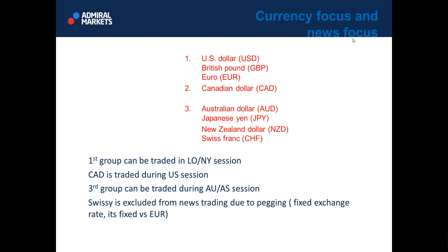Now we have currency focus and news focus. In the first place we have Dollar, British Pound, and Euro — they can be traded in London and New York sessions. CAD is traded during the US session, London-New York cross session. A third group can be traded during the Australian-Asia session: Australian dollar, Japanese yen, New Zealand dollar, and Swiss franc — though I don't trade Swiss franc so often because of the EUR/CHF peg. I gave you a Euro New Zealand setup yesterday, and that setup was hit one to two hours after my analysis. The POC was hit subsequently, driven by good New Zealand news, and it was good for 300 pips. A couple of traders got 20 to 40 pips, which is excellent.